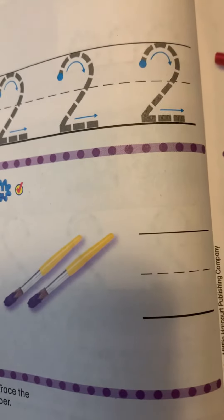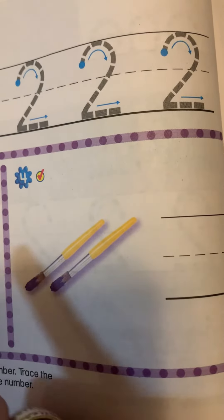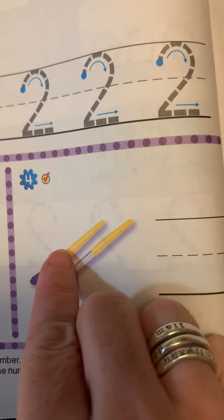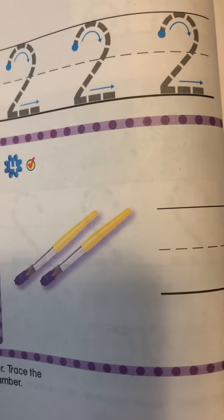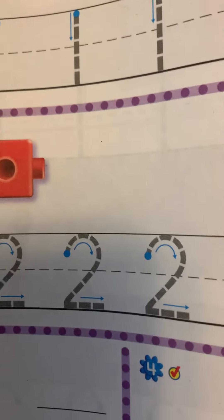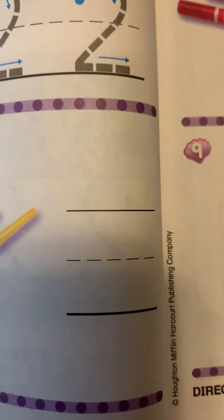Now we're going to count the paintbrushes. One, two. How many are there? Look at the number one. Look at the number two. Let's write the correct number.